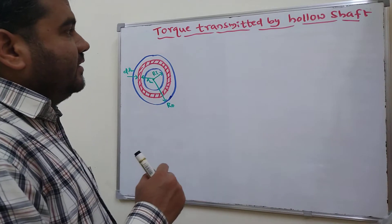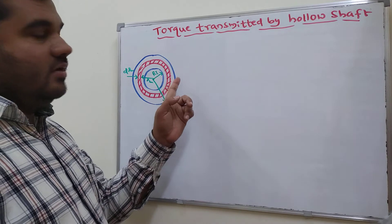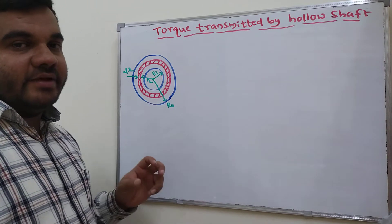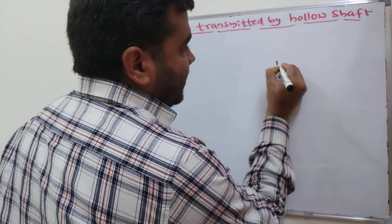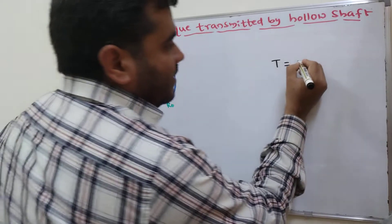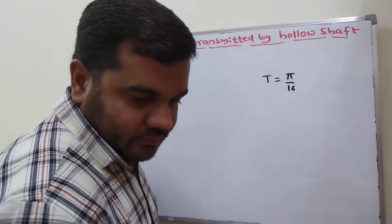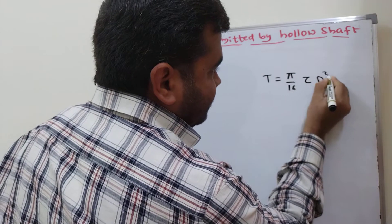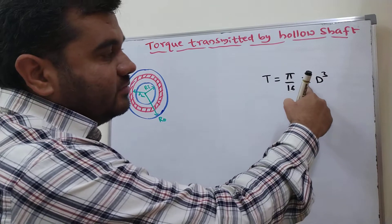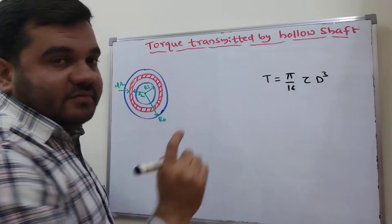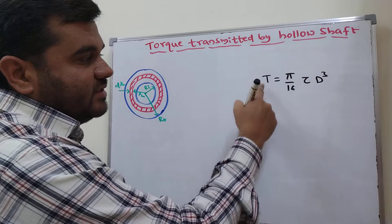In this video, we will derive the equation for the torque transmitted by the hollow shaft — how much torque is generated in the hollow shaft. In the previous video, we derived the torque equation for the solid shaft. To recall, the torque developed in the solid shaft is T = π/16 · τ · d³, where τ is the maximum shear stress developed at the outer surface, d is the diameter of the solid shaft, and T is the maximum torque developed.